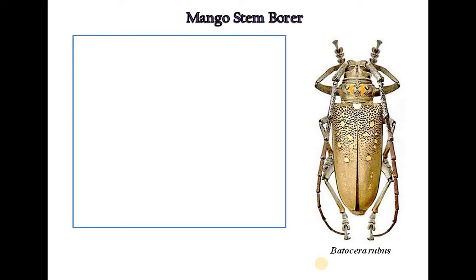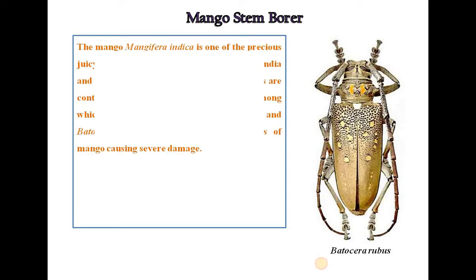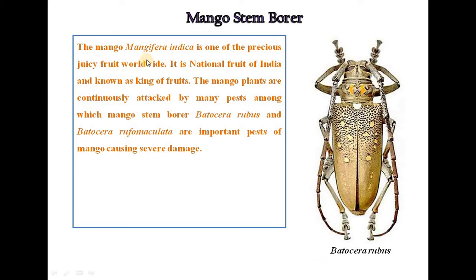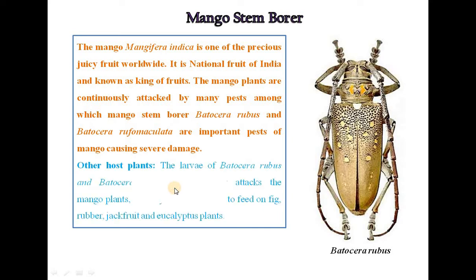The next important pest species is the mango stem borer. Mango, Mangifera indica, is one of the most precious juicy fruits worldwide. It is the national fruit of India and known as the king of fruits. Mango plants are continuously attacked by many pests, among which mango stem borers Batocera rubis and Batocera ruformaculatum are important pests causing severe damage. The larvae mainly attack mango plants but are also known to feed on fig, rubber, jackfruit, and eucalyptus.